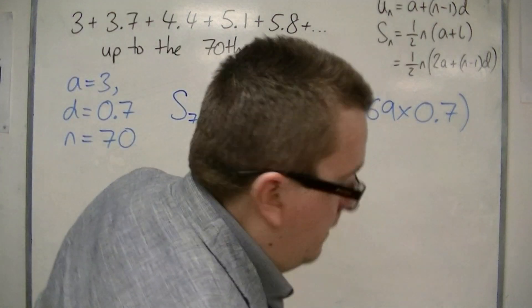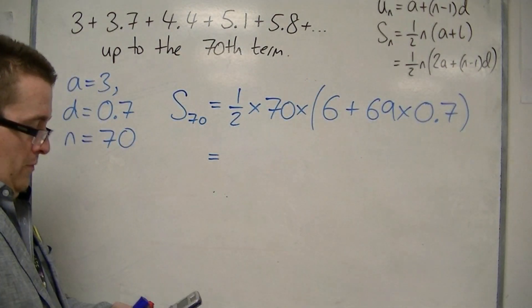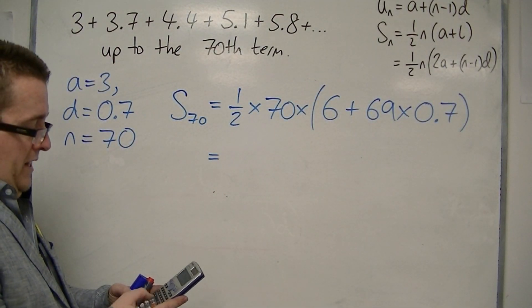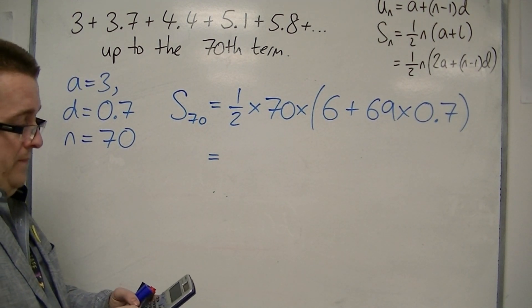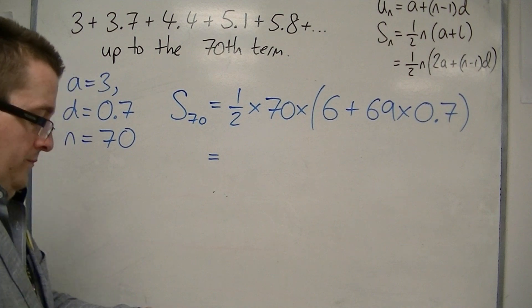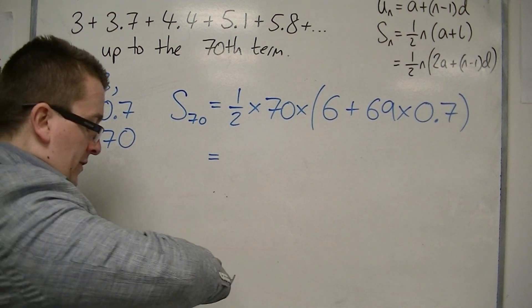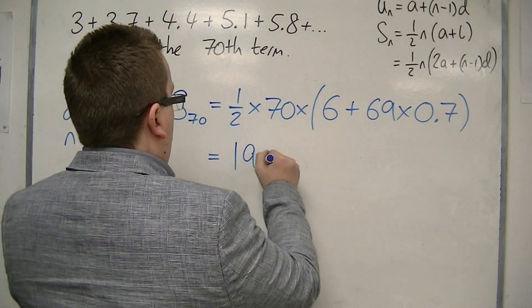Throw that into the calculator, so 0.5 times 70, times 6, plus 69, times 0.7, and I get 1,900.5.